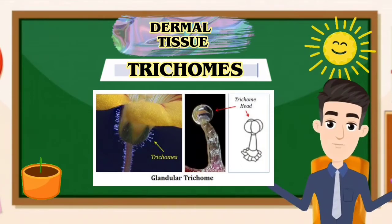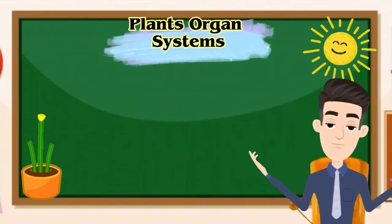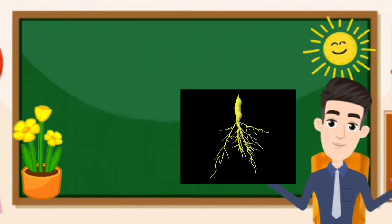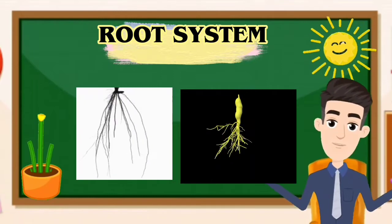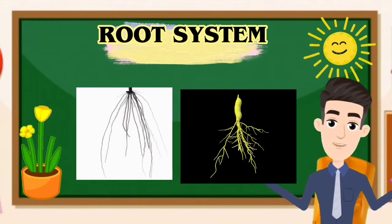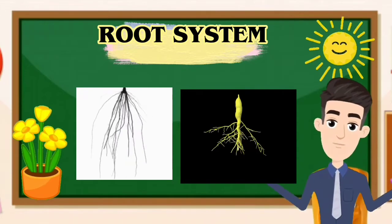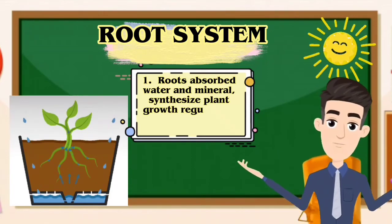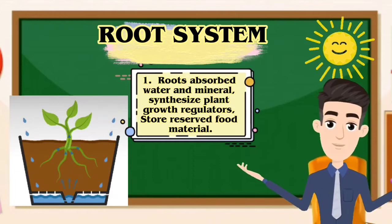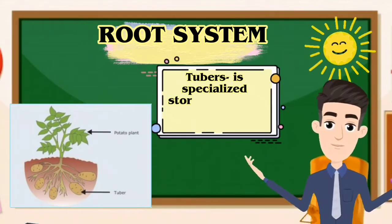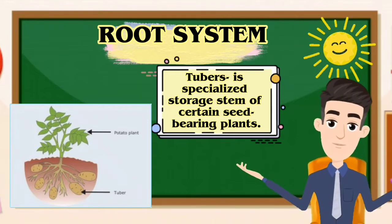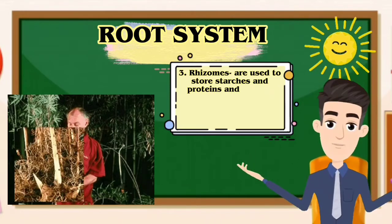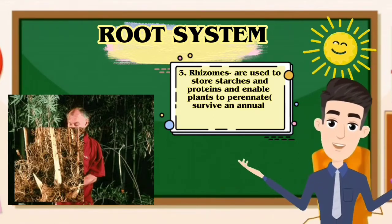The organs or parts of a plant can be divided into two organ systems: the shoot system and the root system. The root system is the network of all the roots of a plant and related organs that the plant can develop. It includes the following: one, roots absorb water and minerals from the soil, synthesize plant growth regulators, and store reserve food material. Two, tubers, which are specialized storage stems of certain seed-bearing plants. Three, rhizomes are used to store starches and proteins and enable plants to perennate or survive an annual unfavorable season underground.